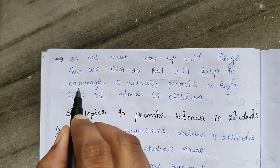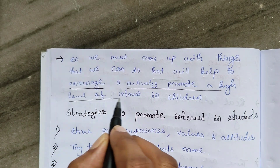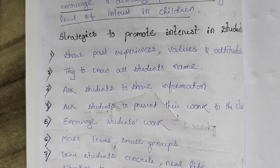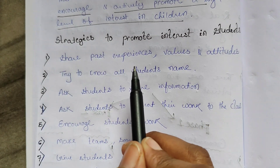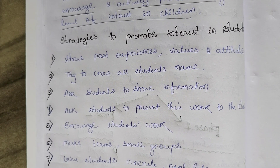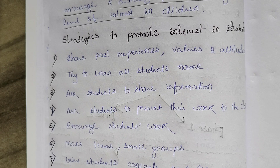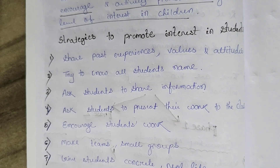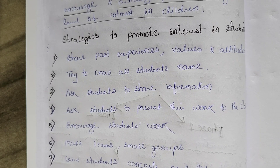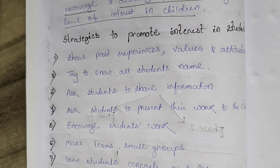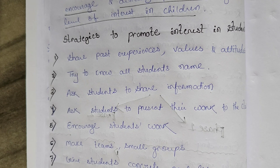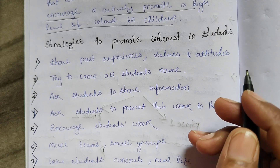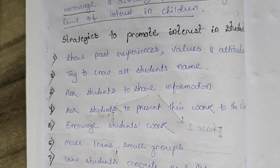Strategies to promote interest in students: First, share your past experiences. The teacher can share stories, past experiences, values, and attitudes in the class — don't go directly to the book. Always try to know all students' names. When you first go to the class you can't remember all names, but after one or two months you need to remember every student's name.